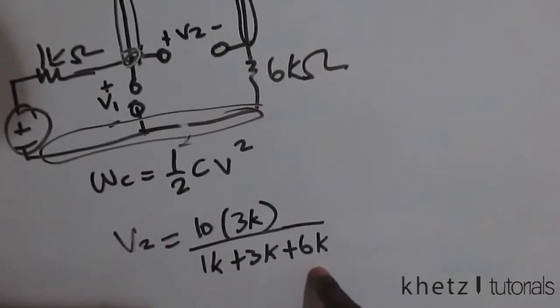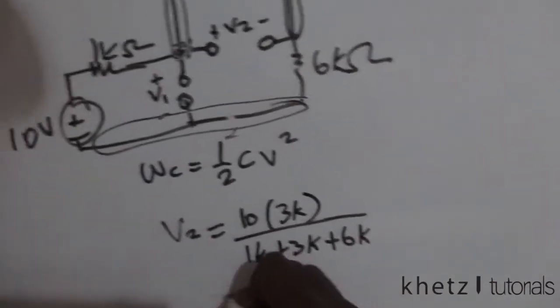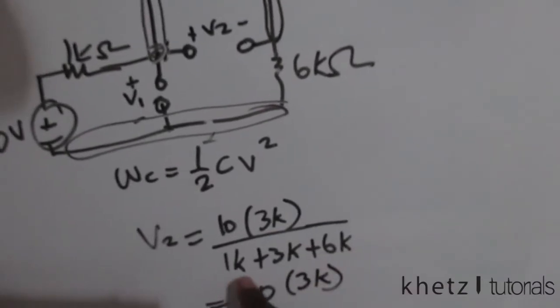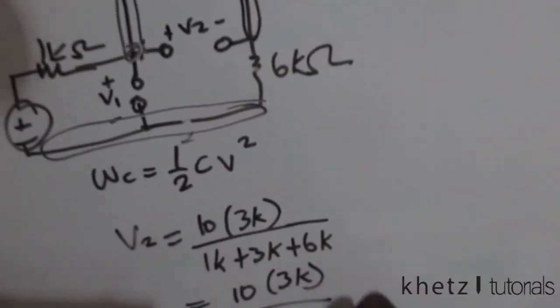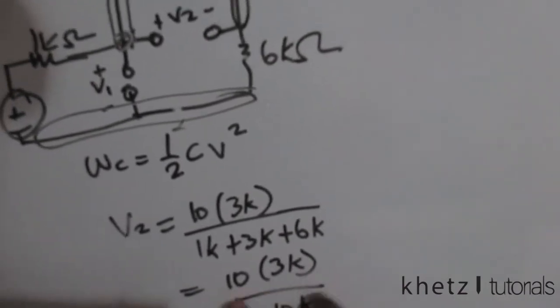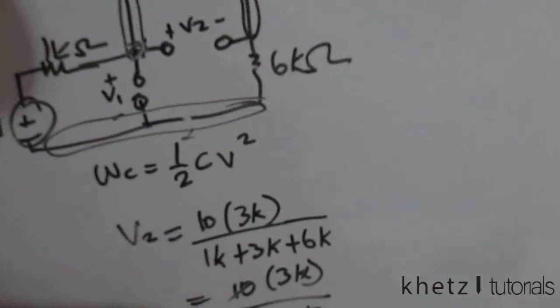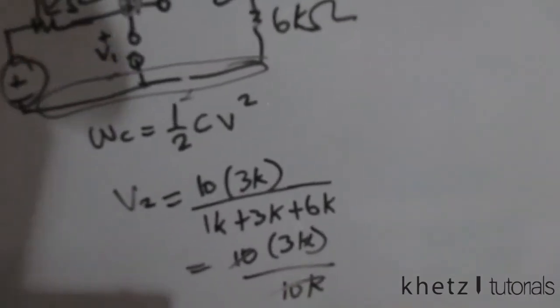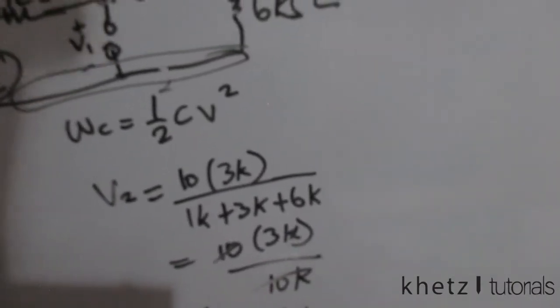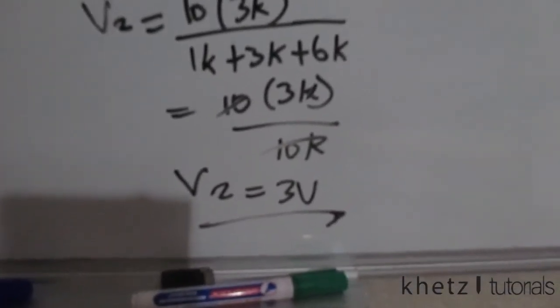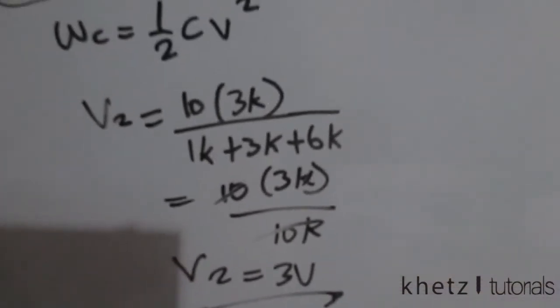This would be 10 multiplied by 3k divided by 10k at the bottom, and the 10k cancels out. Which means v2 equals 3 volts. So we found v2 to be 3 volts.